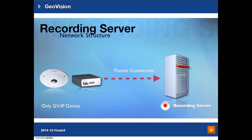The second type of connection is passive connection, where only GV IP devices are supported. When using passive connection, the IP devices will automatically send their stream directly to the Recording Server. You can use this when your IP devices are using dynamic IP, where the IP will constantly change, and no matter what IP it changes to, the connection will not be interrupted.